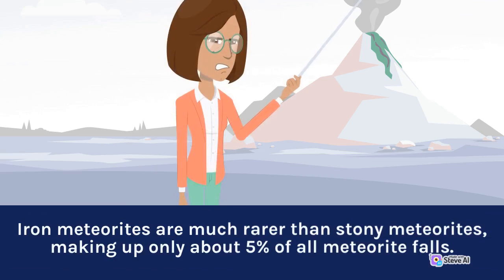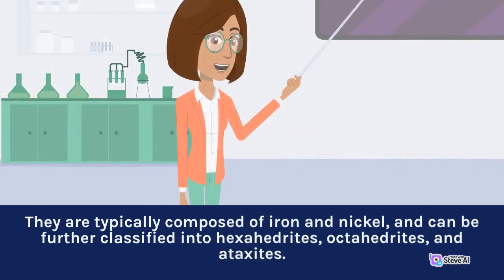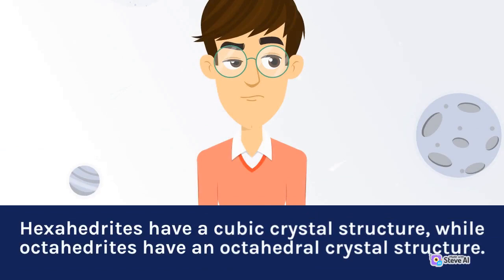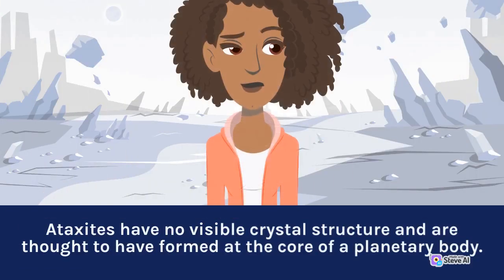Iron meteorites are much rarer than stony meteorites, making up only about 5% of all meteorite falls. They are typically composed of iron and nickel, and can be further classified into hexahedrites, octahedrites, and ataxites. Hexahedrites have a cubic crystal structure, while octahedrites have an octahedral crystal structure. Ataxites have no visible crystal structure and are thought to have formed at the core of a planetary body.